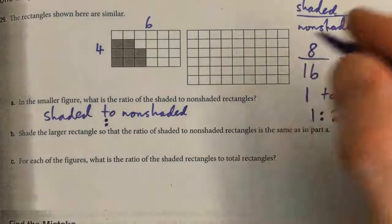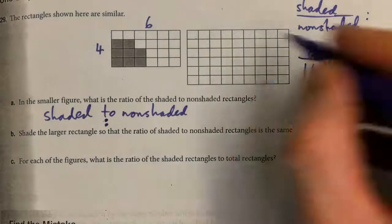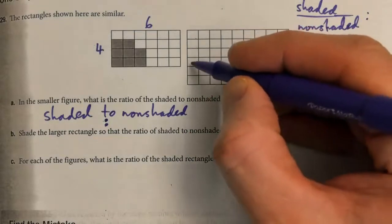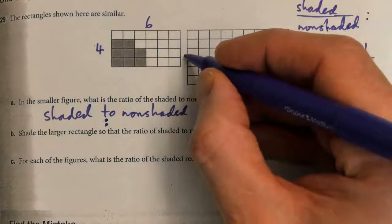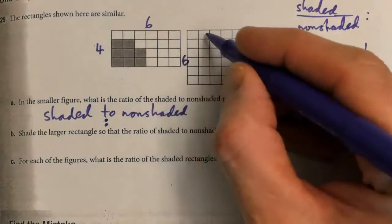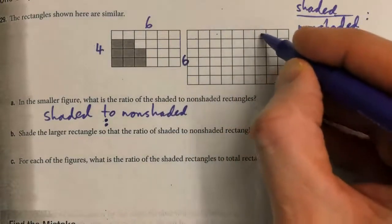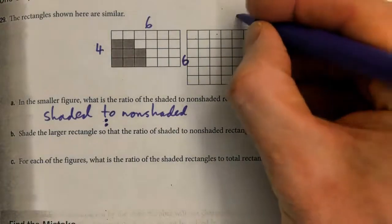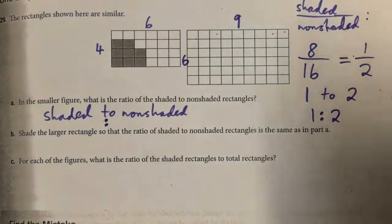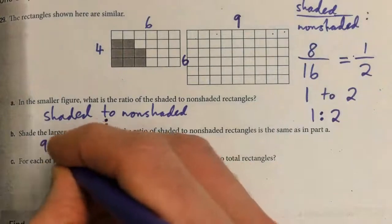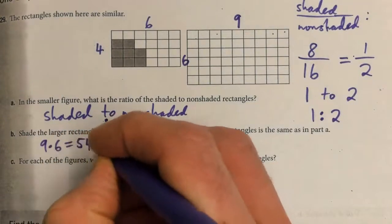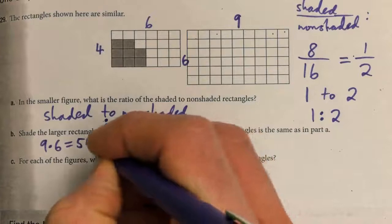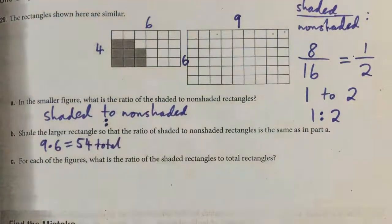It has to be ratio 1 to 2. Let's count how many we have total: 1, 2, 3, 4, 5, 6 on the width; 1, 2, 3, 4, 5, 6, 7, 8, 9 on the length. 9 times 6 is 54 total.